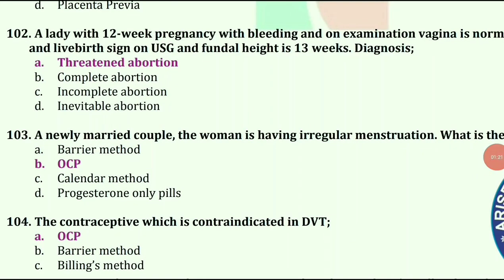A newly married couple — the woman is having irregular menstruation. What is the contraception of choice? The answer is OCP.